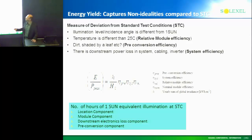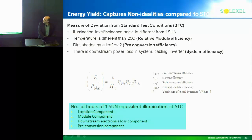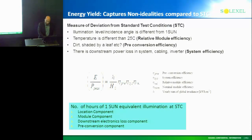There are also downstream power losses in the system: cabling, inverter, and all the system efficiencies. Energy yield's units are effective hours per day that the illumination corresponds to standard conditions. The number ranges from three to six hours in a 24-hour period, and the dependence arises from location — latitude, longitude, angle, and so on.